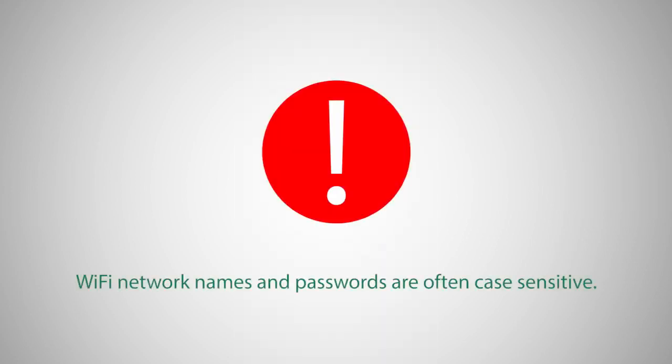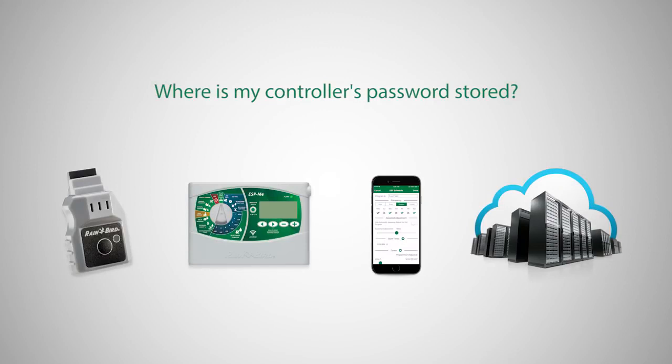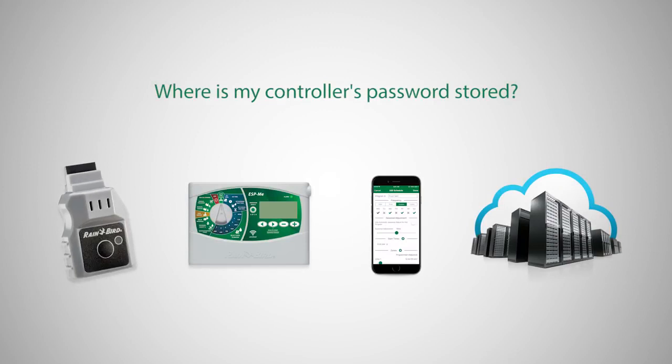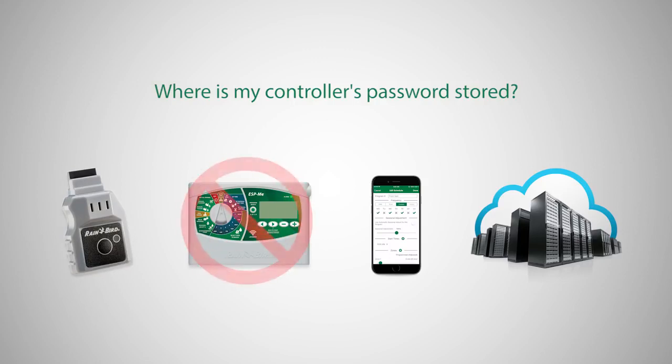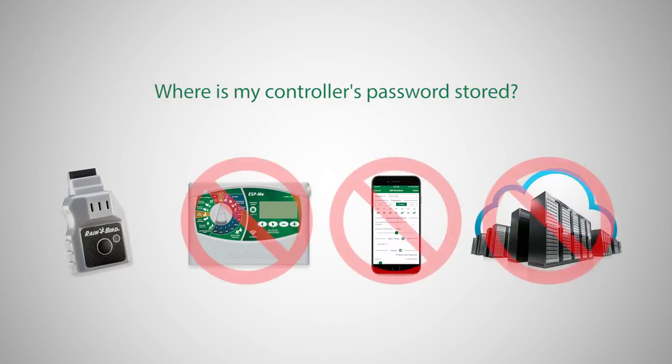Wi-Fi network names and passwords are often case-sensitive, so be sure to enter the data correctly. These Wi-Fi login credentials are securely stored only in the LINQ Wi-Fi module. They are not stored in the controller, the Rainbird app, or Rainbird servers.